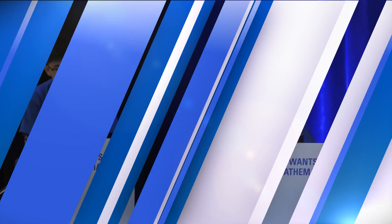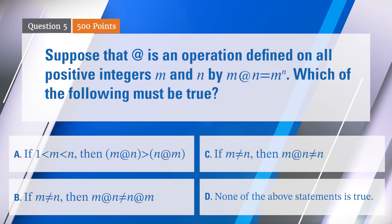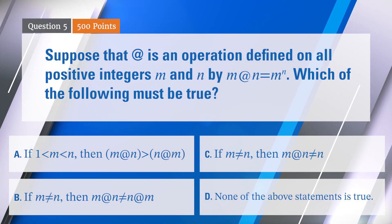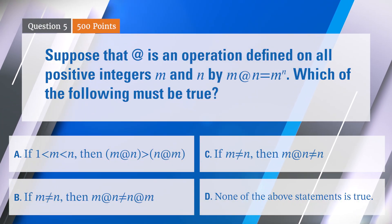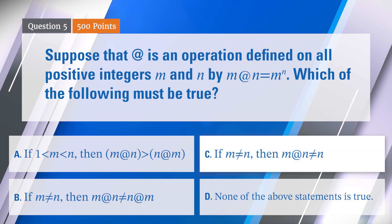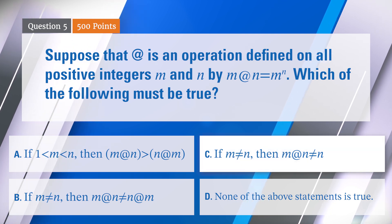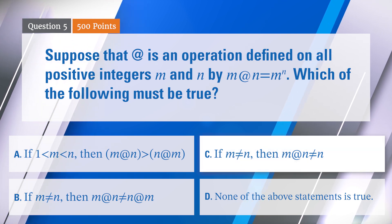All right, let's see how many people chose what. Six people chose C — if m is not equal to n, then m @ n is not equal to n. Is that correct? It is. Very good, nice going.